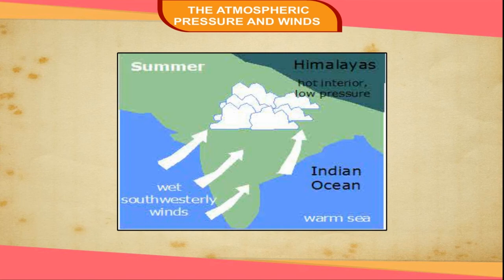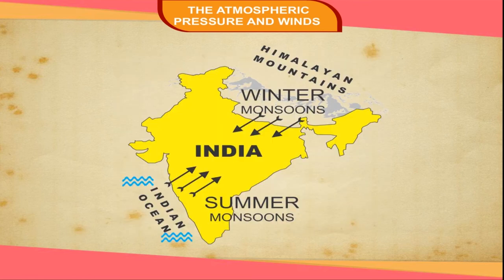During summers, the landmass heats up rapidly and an intense low pressure area develops over central Asia, which attracts winds from the high pressure area. As a result, the southeast trade winds cross the equator and bring heavy rainfall to large parts of Asia. These are known as summer monsoons. During winter season, the landmass becomes cooler and the pressure over central Asia becomes high. From this high pressure area, the winds blow towards the equatorial low pressure area in the northeast direction. These are known as winter monsoons.